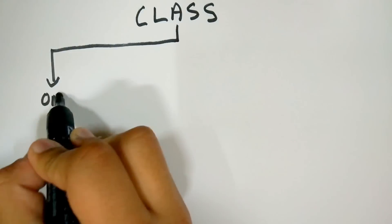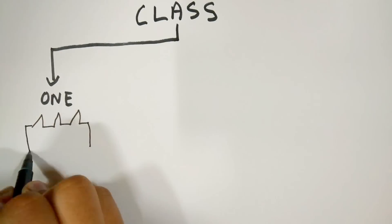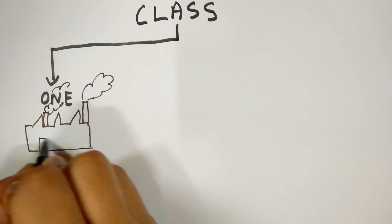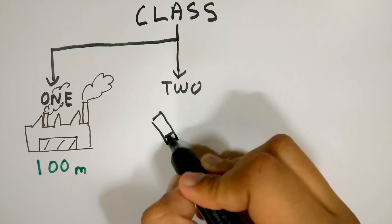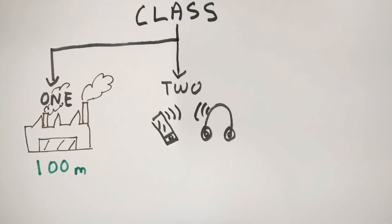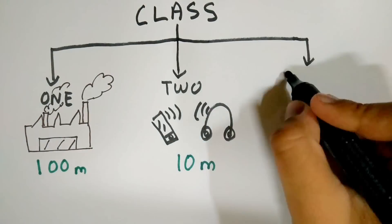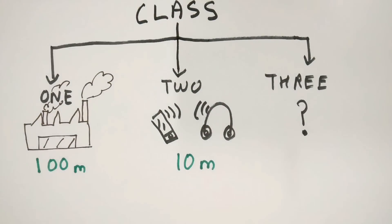Bluetooth devices come in three classes. Class 1 devices are used for industrial applications and have a range of 100 meters. Devices like your mobile phone or Bluetooth headset are class 2 devices which have a range of 10 meters. Class 3 devices have a range of about 1 meter and are rarely used.